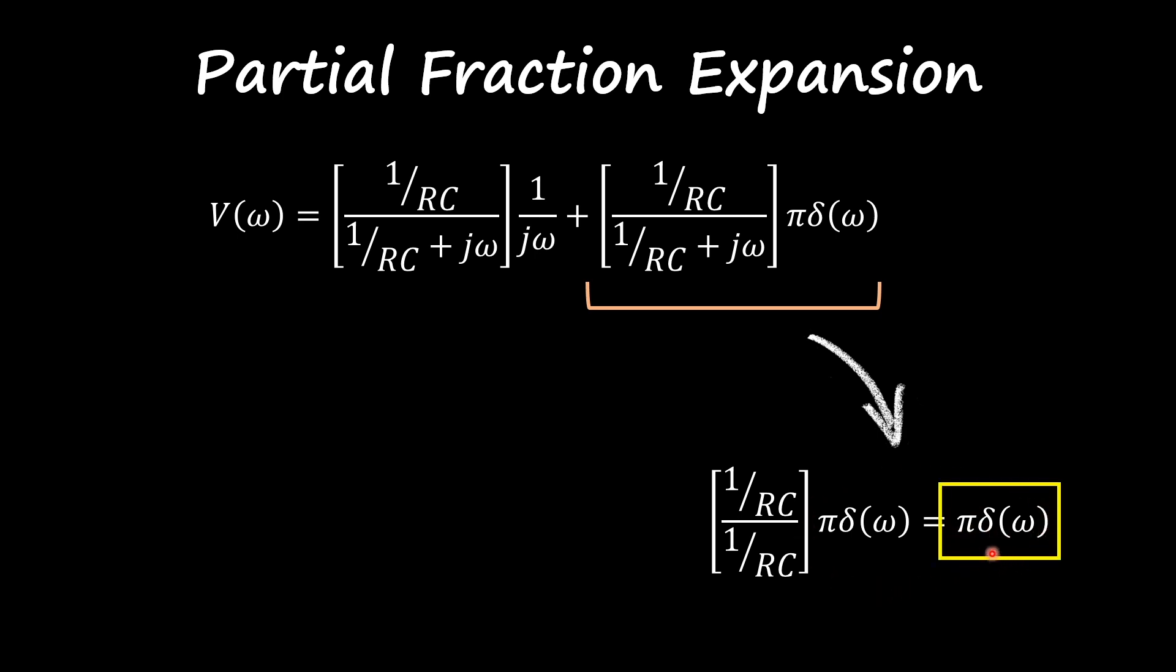Now you might be wondering what is this function over here. This function is called an impulse. If I graph this impulse in the frequency domain, it's simple - just one spike when the frequency is equal to zero. All the other frequencies, the signal is zero.